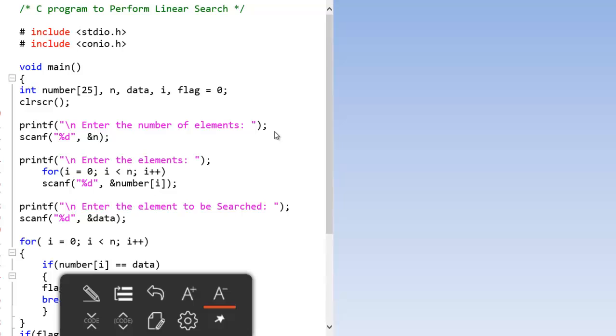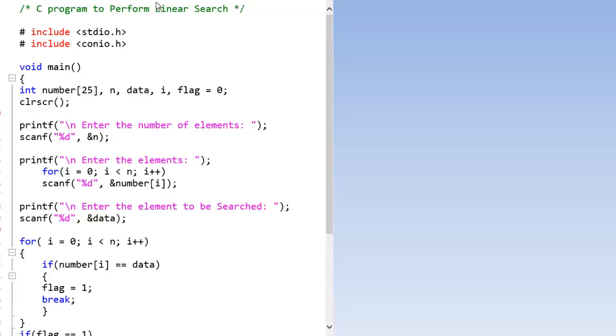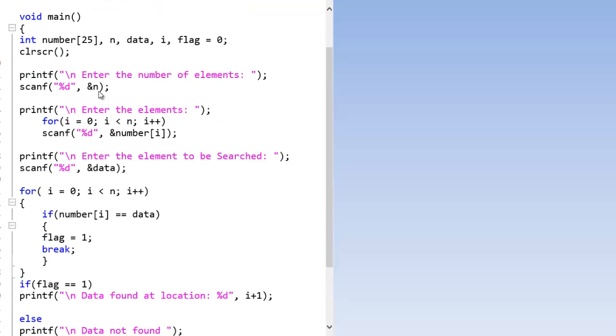So this is a simple technique so directly get into the actual code. So here is the C program to implement a linear search. So here I am asking for the user to enter number of elements which is stored in n and is going to enter all the elements which will be stored in the array number[i]. So here number is the array which is going to store the elements. So number is an array here a maximum of 25 elements.